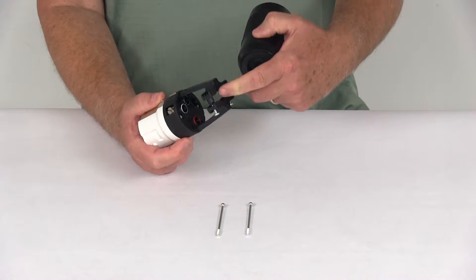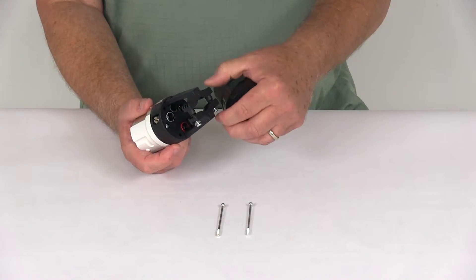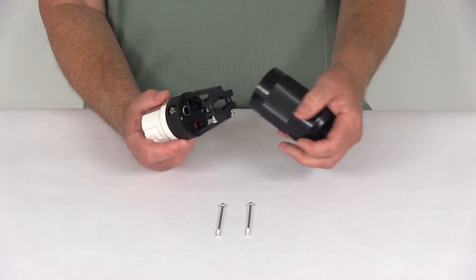You bring your pigtails through, run it through here, make your connections of the pigtail wires, and then tighten this down over the cord to hold it into place.